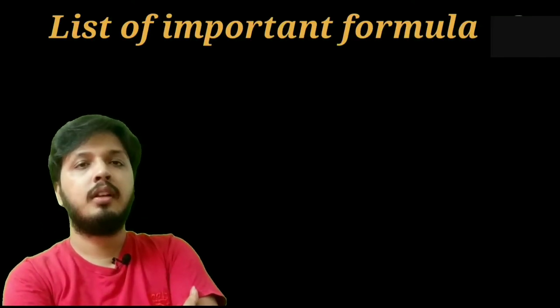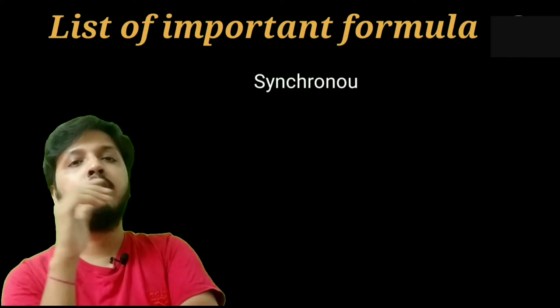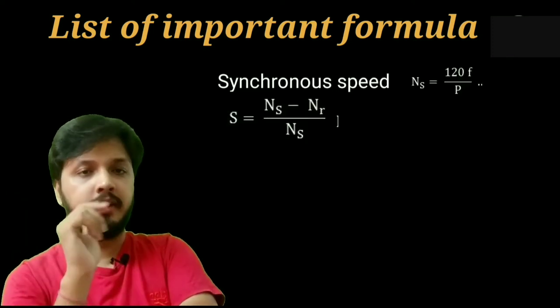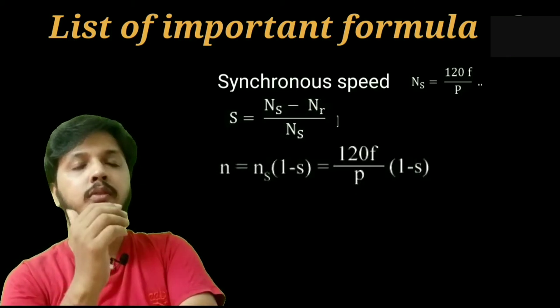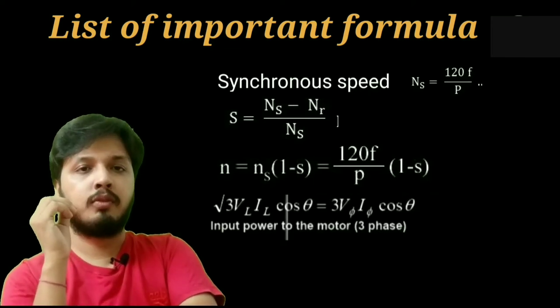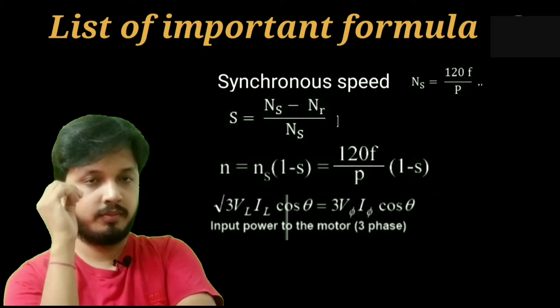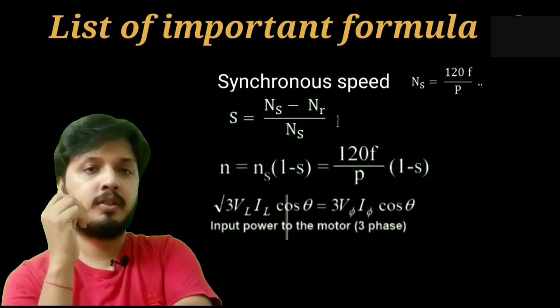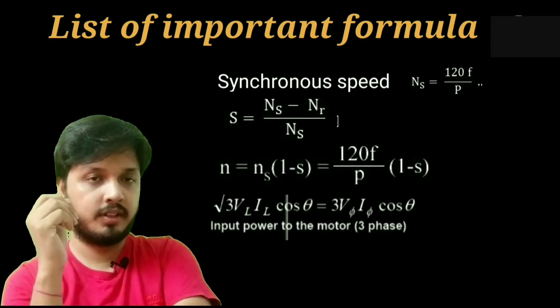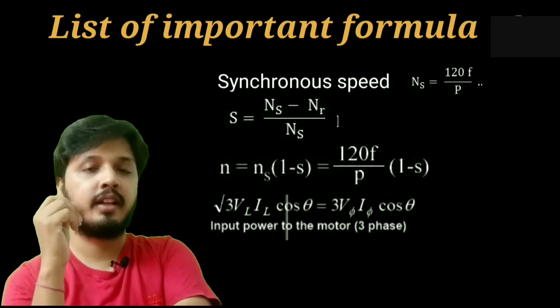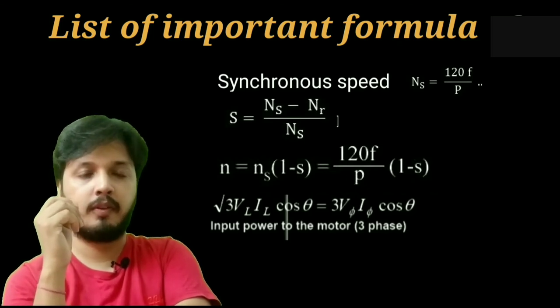Now we will discuss about some important formulas of induction motor. Synchronous speed equals 120f by P. Slip equals NS minus NR by NS. Rotor speed equals (1 minus s) into NS. Input power equals root 3 V1 I1 cos phi, where V1 is the line input voltage to the stator, I1 is the line input current to the stator, and phi1 is the angle between V1 and I1. It is power factor angle.